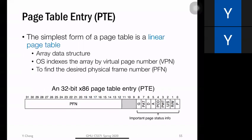Each page table entry (PTE) holds bookkeeping information, most importantly the physical frame number (PFN), along with other status bits. A 32-bit x86 page table entry example shows the high bits reserved for the physical frame number and the low bits maintaining important page status information, which will be discussed in the next video.